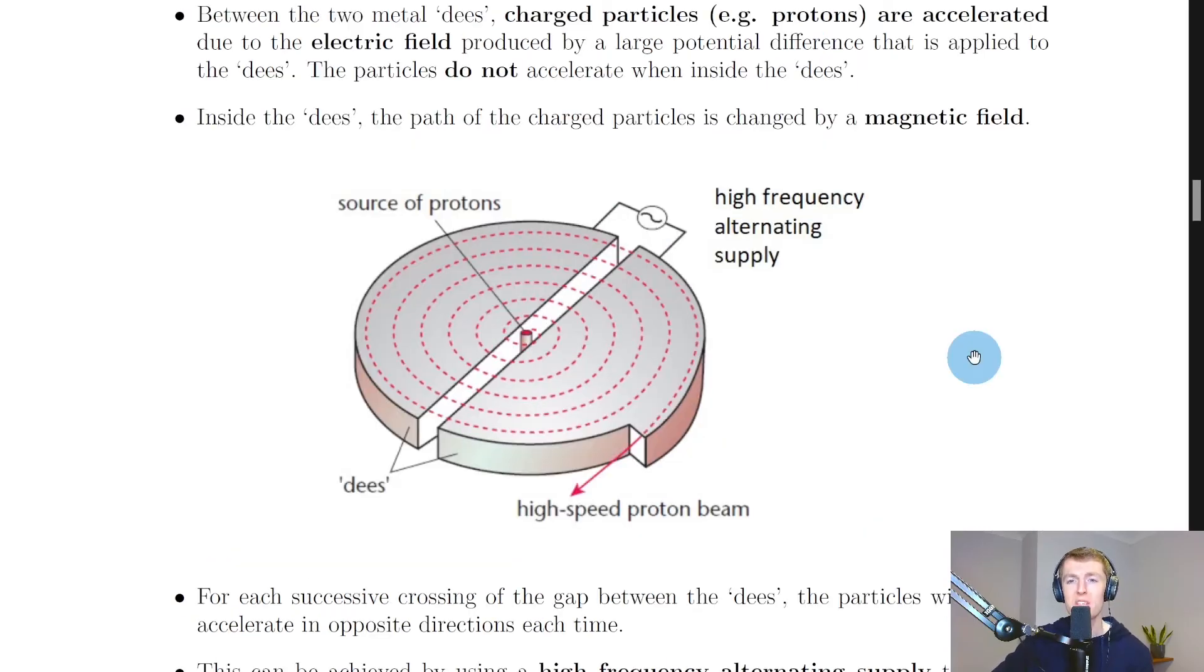In order for the protons in this case to keep accelerating, we need the alternating supply to change the polarity of the dees. Otherwise the protons would reach this plate and then wouldn't move any further if there was no further changing of the polarity.